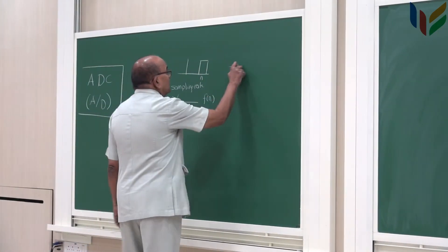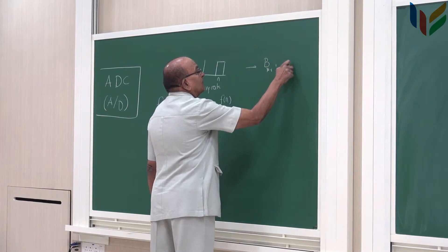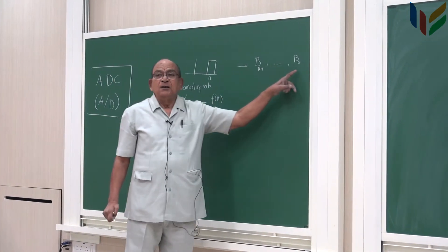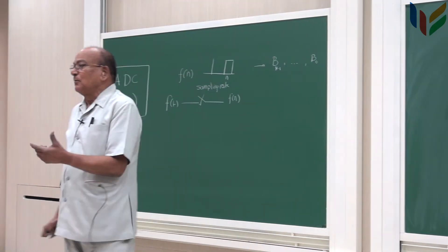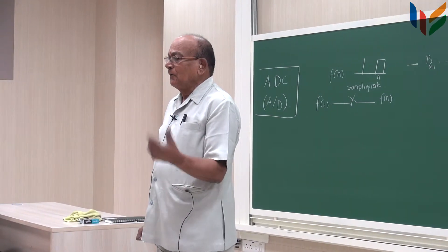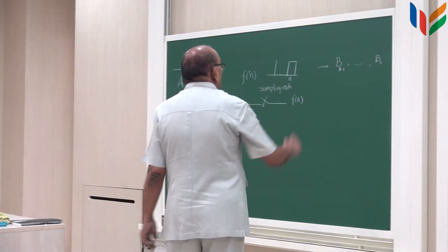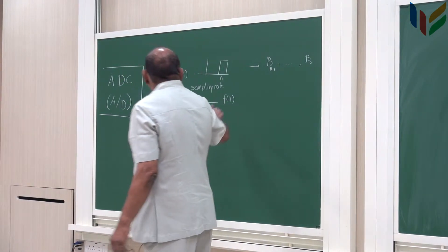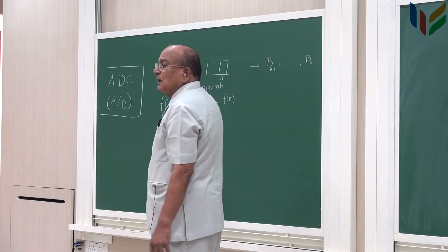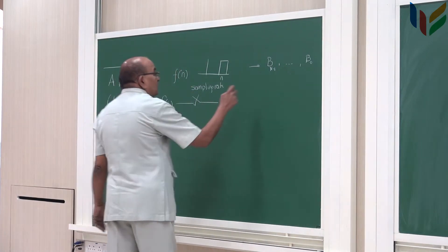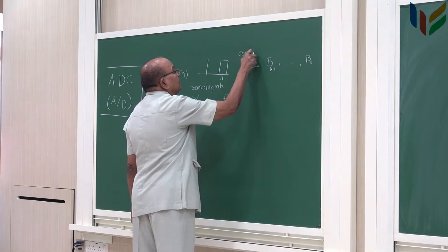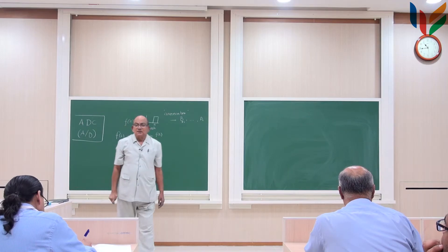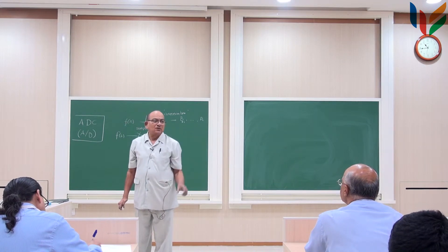It will take some amount of time to do the conversion from the f of n to a corresponding digital number. f of n would correspond to a digital number b n minus 1, comma, comma, b 0. This represents either a 1 or a 0, corresponding to the most significant bit to the least significant bit. n bit binary representation of this analog number, sample number f of n to be converted into a binary number. It takes some time to convert this f of n to this in the hardware that we have. We need to keep this somewhere available to us until this conversion time is over.